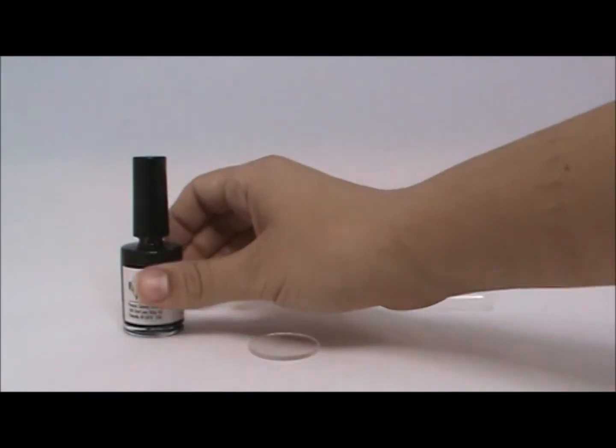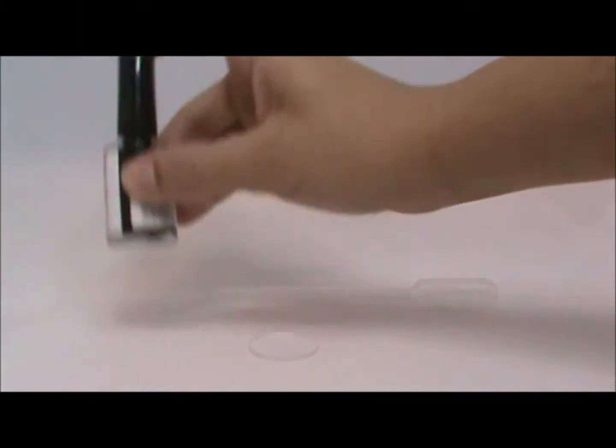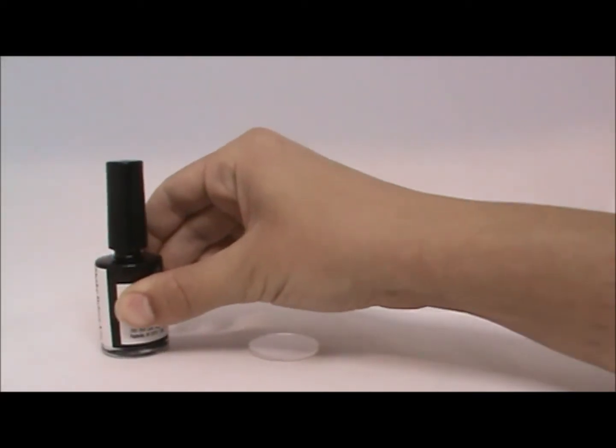Shake the vial of polymer, then apply a thick coat to the optic. This polymer is slightly more viscous than our non-spray polymer.